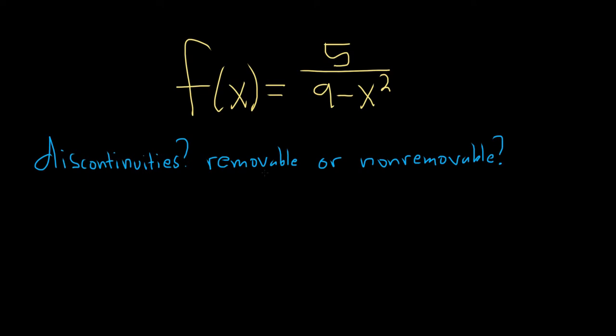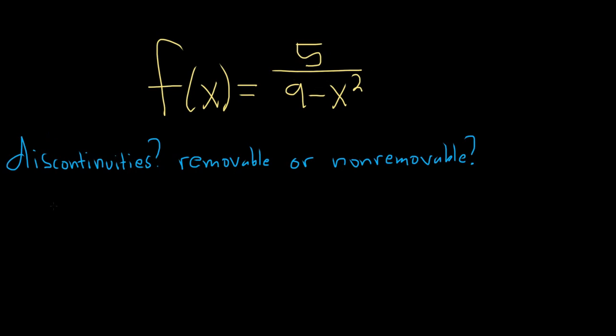Find the discontinuities and identify them as removable or non-removable. So to find the discontinuities, we'll set the bottom equal to 0. So we have 9 minus x squared equal to 0.